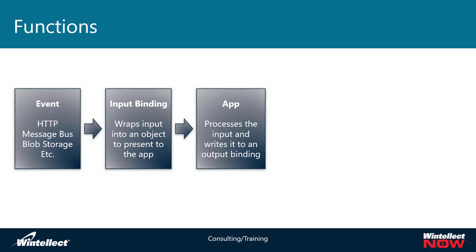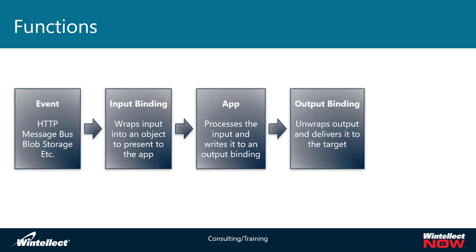Once the app has processed that input, it needs to write it out to something, and that is what we call an output binding. The output binding is also provided by way of configuration — in the same way that an input binding is configured via a GUI or IDE, the output binding is as well. It ends up being presented as an object inside of the app, and then the app will write to that object.